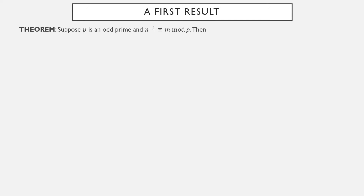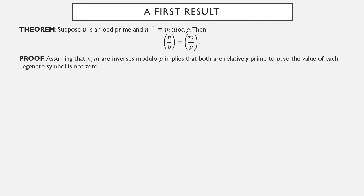Let's establish our first results studying Legendre symbols. Suppose p is an odd prime and n inverse is equivalent to m modulo p. Then these two Legendre symbols take the same value — they're either both one, both zero, or both minus one. But since n inverse is equivalent to m, they both have inverses modulo p, which means they are relatively prime to p. So these two Legendre symbols are not zero, and hopefully they're either both equal to one or they're both equal to minus one.